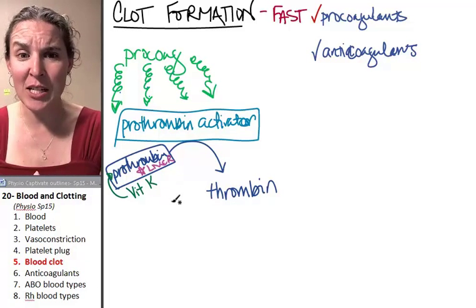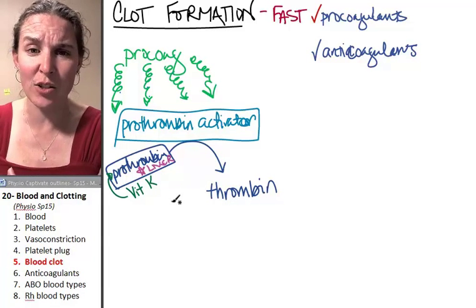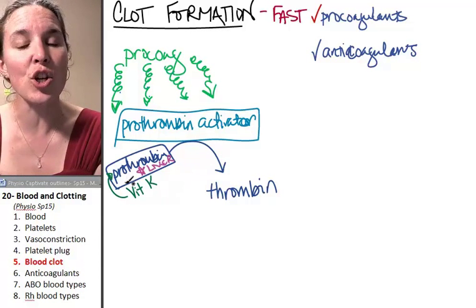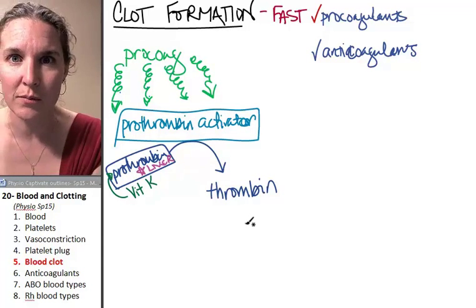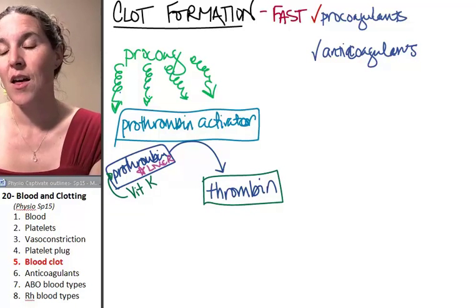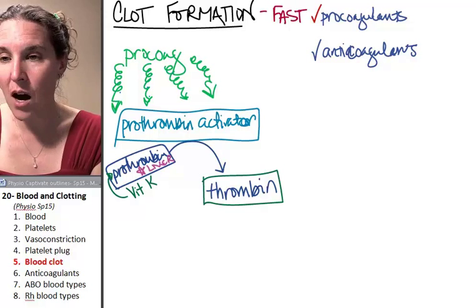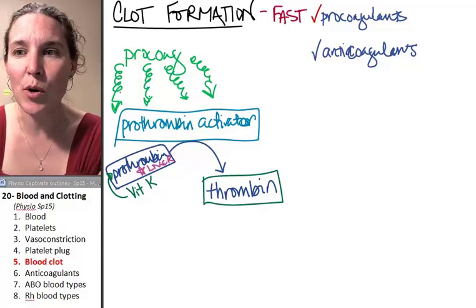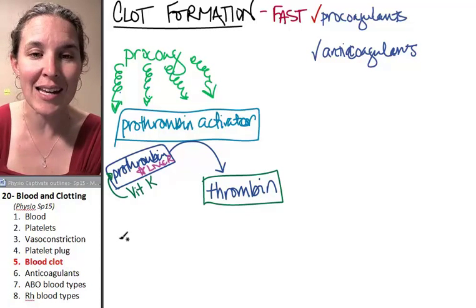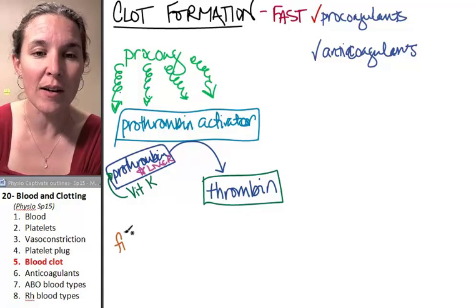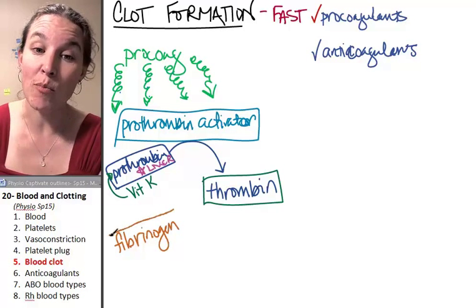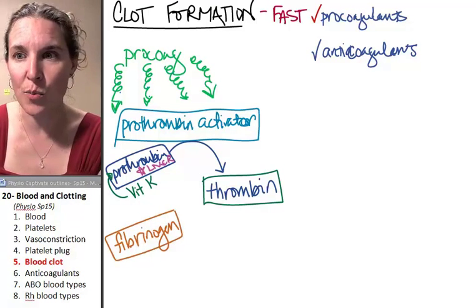Now we've had damage. We get a pro-coagulant crazy cascade. And now we have pro-thrombin activator, which turns pro-thrombin into thrombin. Guess what thrombin does? Thrombin is not the end game. There is another plasma protein floating around in your blood, produced also by the liver, and it is fibrinogen.